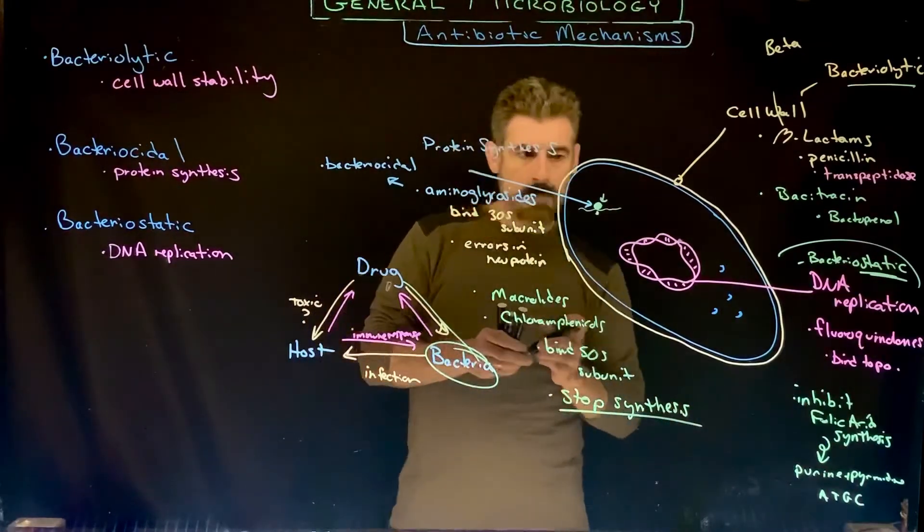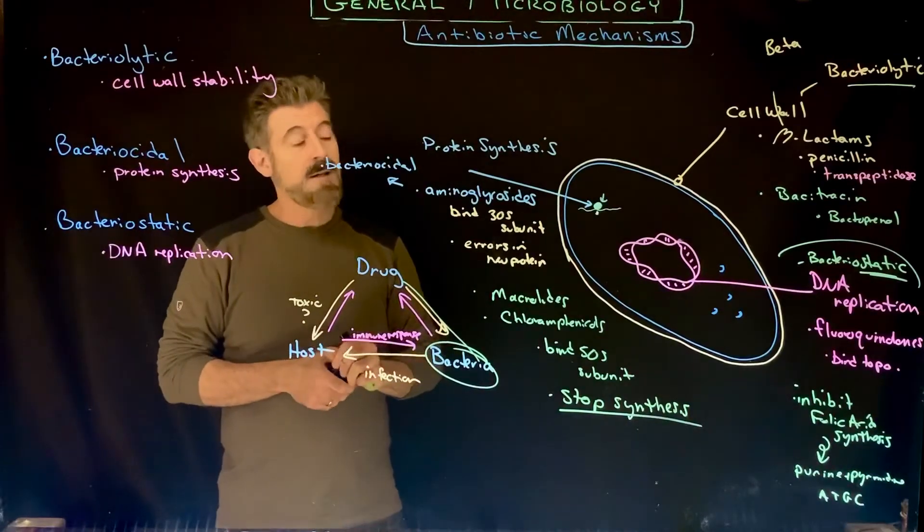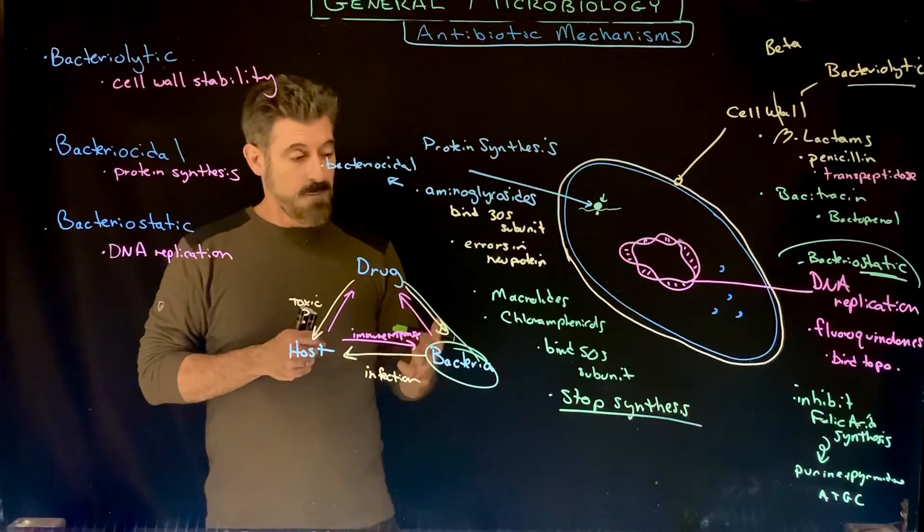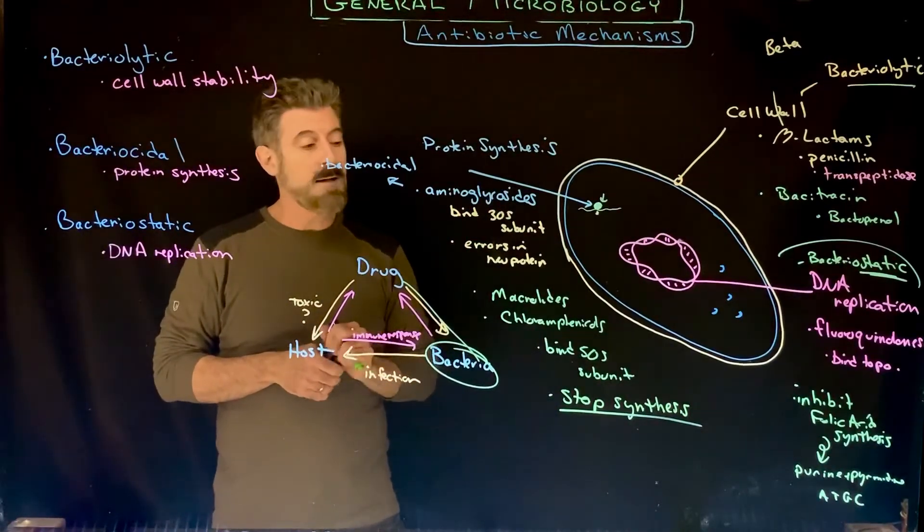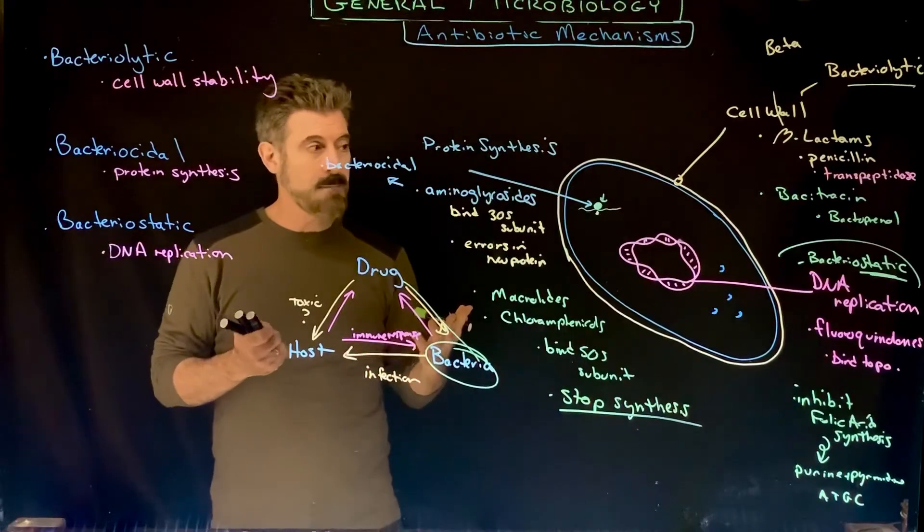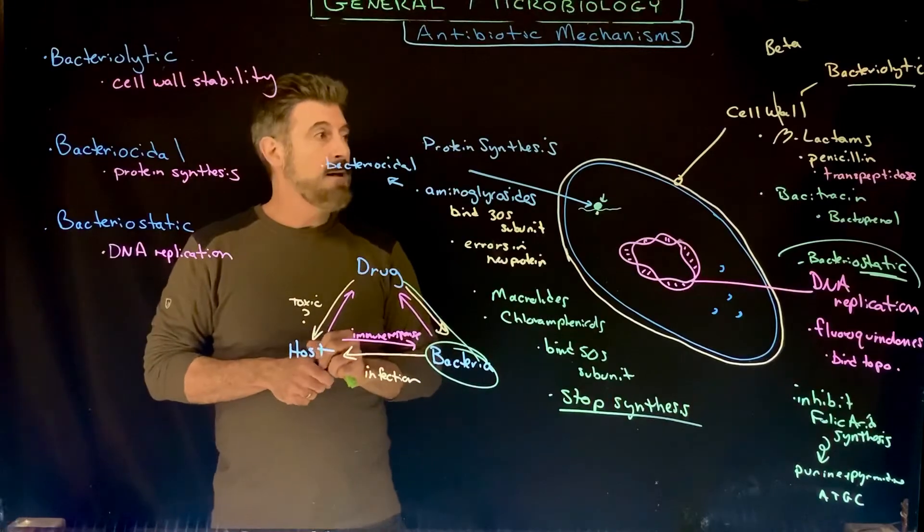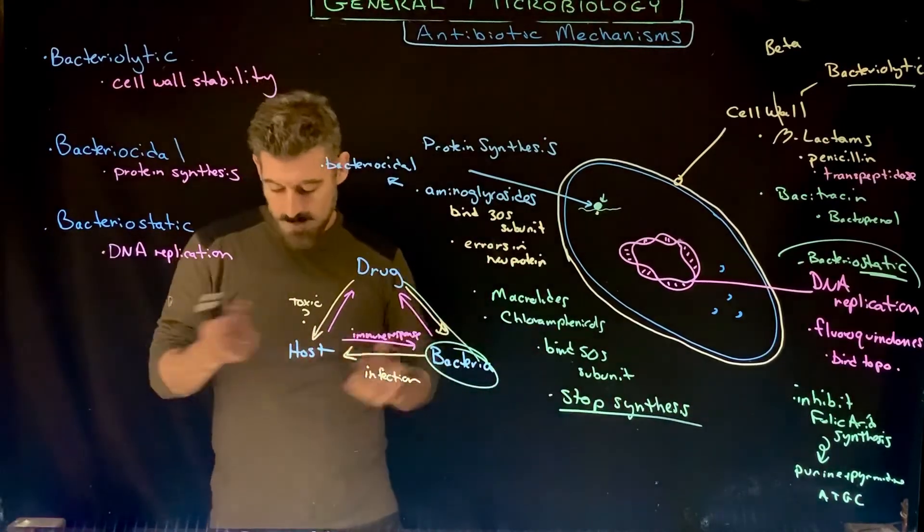Through binding to the 50S subunit they typically stop protein synthesis. Whereas binding to the small subunit usually disrupts the process and can cause errors in the process, binding to the large subunit usually will shut it down and you won't get the protein produced. Again that can be bacteriostatic or it could be bactericidal, and it really depends on where those proteins are going to end up.